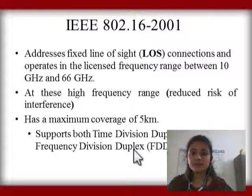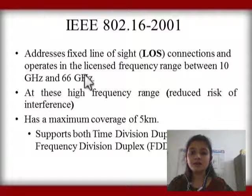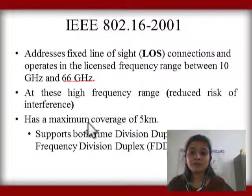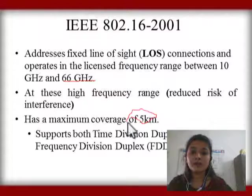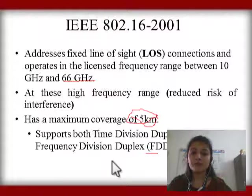First we will discuss about 802.16. The access is fixed line of sight. The frequency range is between 10 GHz and 66 GHz. It has a maximum coverage of 5 km. It supports both TDD and FDD — TDD stands for Time Division Duplex and FDD stands for Frequency Division Duplex.